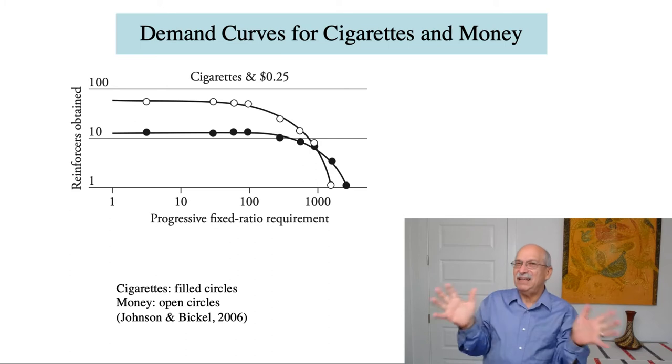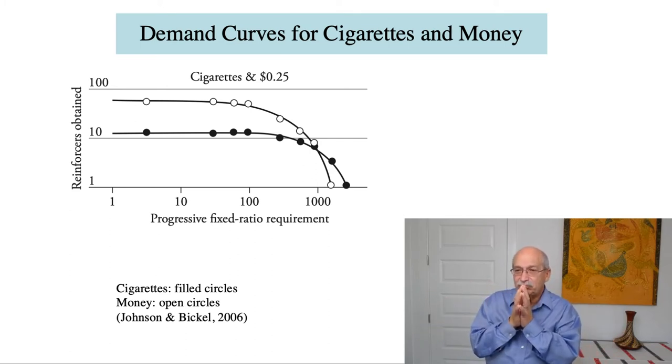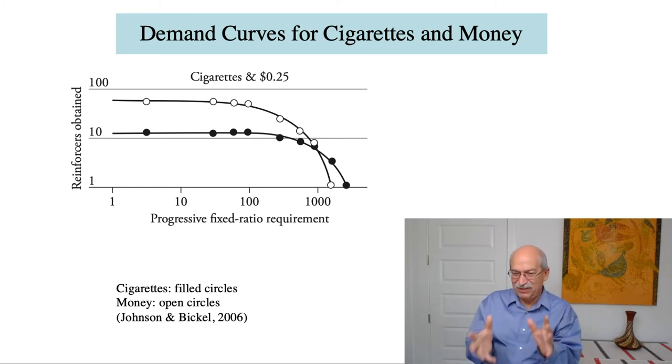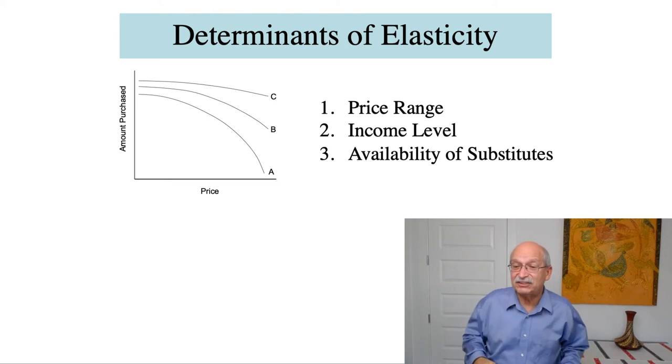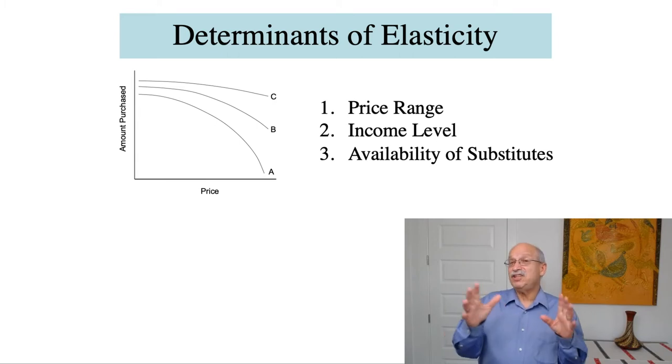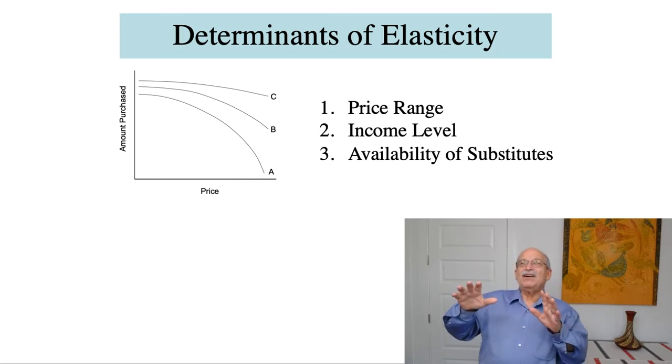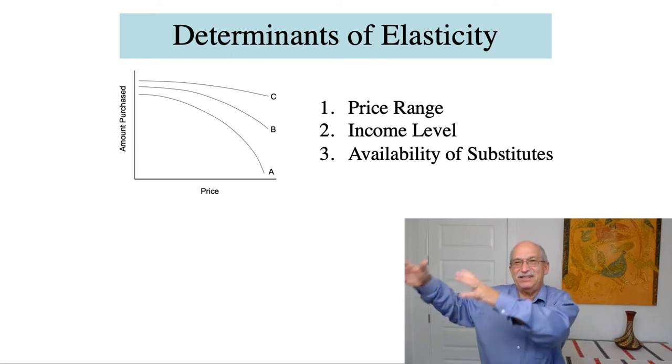Okay. So from the standpoint of analysis of instrumental conditioning, the most important concept or things to take into account is what determines the elasticity of demand? What determines how rapidly consumption drops off as an increase in response requirement? And the next slide illustrates the critical factors, critical factors determining elasticity. And this is true, not just in psychology, but in economics. One of the factors is the price range. You notice that for each of those demand curves, at the low range of prices, the curves tend to be fairly flat. Whereas at the high end of the price range, that's when you start to see drop-offs in consumption. So price range is a big important variable.